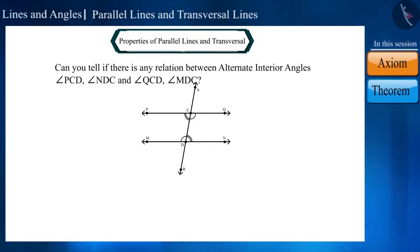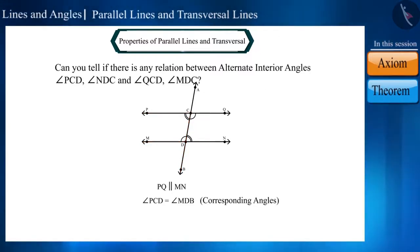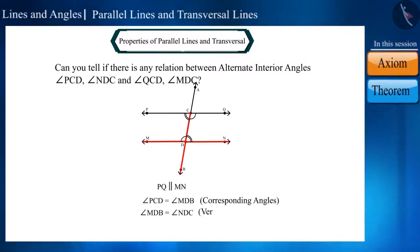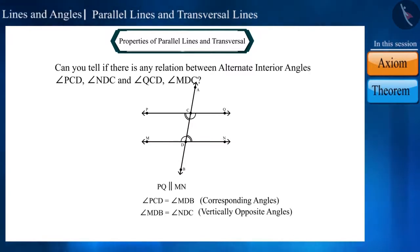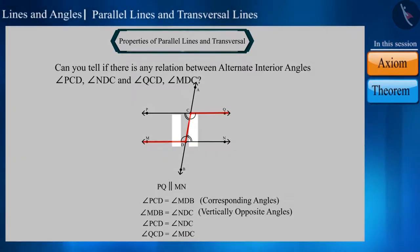Let's say we have been given that the lines are parallel. Angle PCD and angle MDB are corresponding angles, so they will be equal. Angle MDB and angle NDC are also equal as they are vertically opposite angles. From this we can draw the conclusion that angle PCD and angle NDC will also be equal. Similarly, we can also prove angle QCD and angle MDC to be equal to each other.